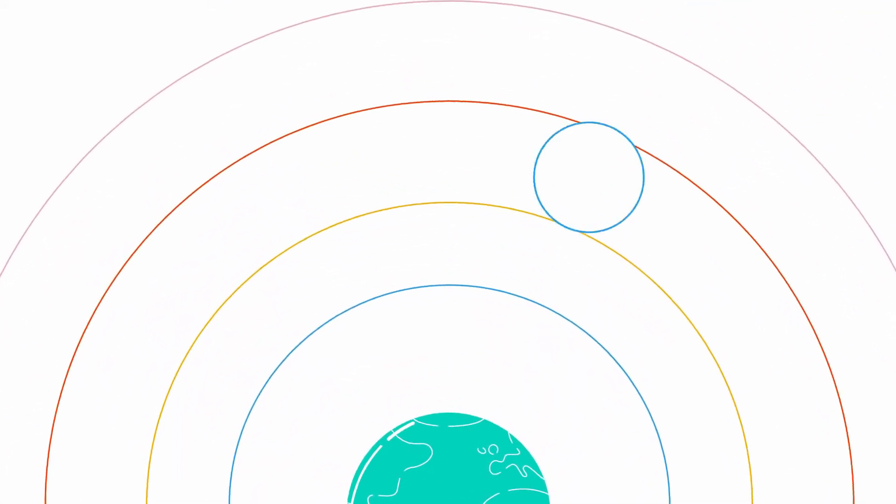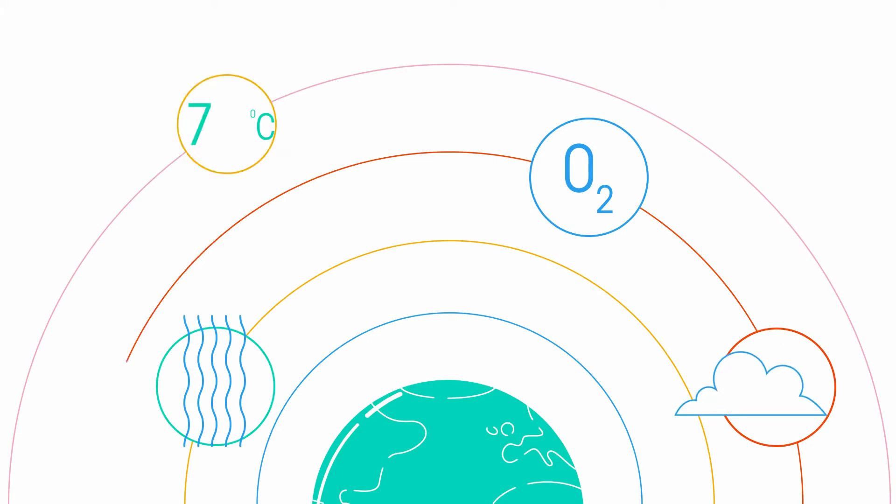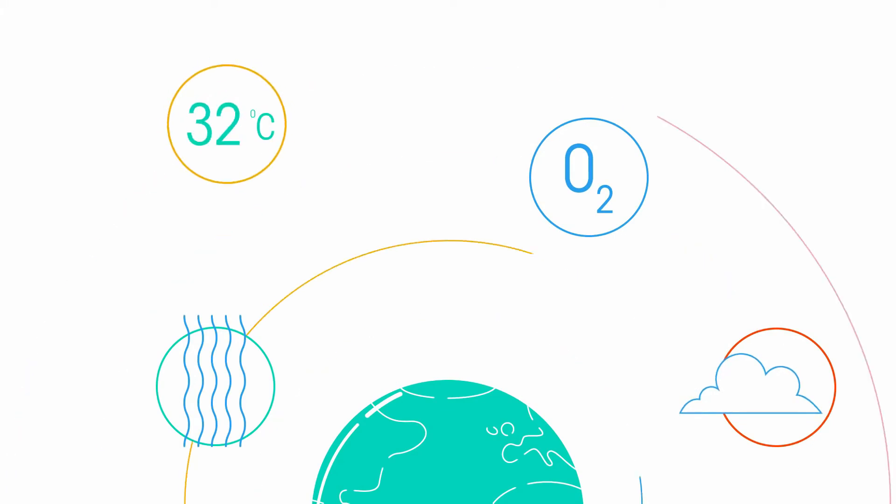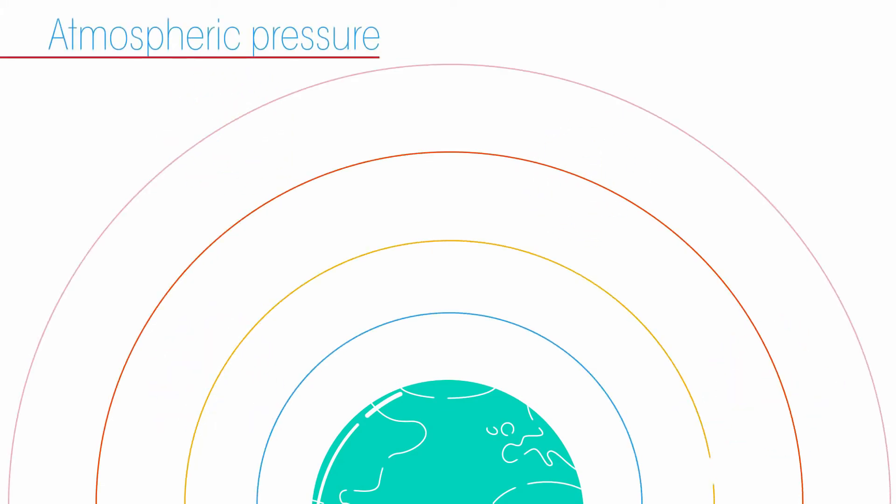So, we've seen some of the many reasons why the atmosphere is so fundamentally important for life on Earth. We're going to finish with a quick look at variation in atmospheric pressure.